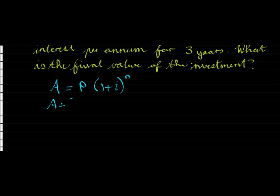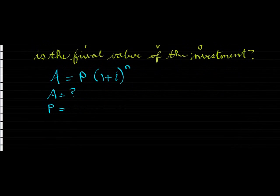My future value, my accumulated value is the value I do not know. My principal value is the original value which is 2,000 Rand.